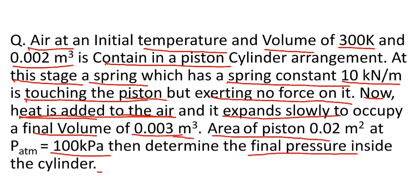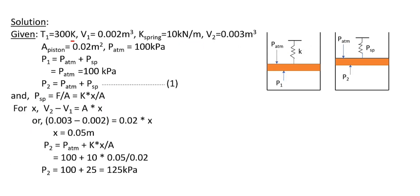The initial atmospheric pressure is given as 100 kPa and we have to find the final pressure inside the cylinder after the addition of heat to the air. I hope you understand this question well — now let's go for the solution.